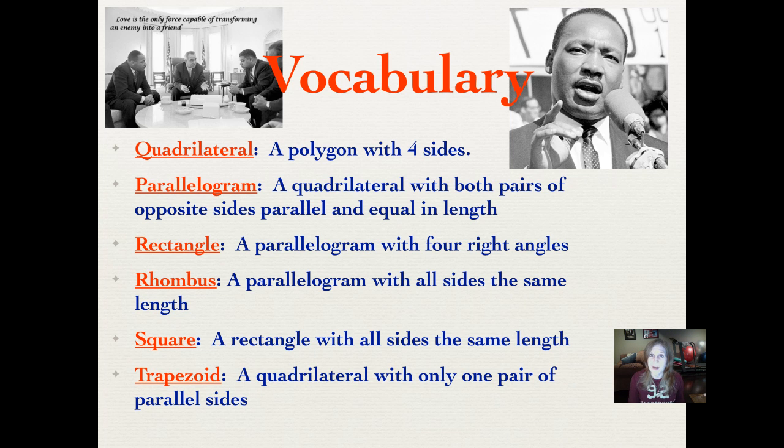Remember, quadrilateral is that overall term for a polygon with four sides. A parallelogram - the word parallel means two lines that run next to each other an equal distance apart and never cross. This wouldn't be a parallel line because they eventually cross, but this would be a parallel line whether it runs this way or that way. A parallelogram is a quadrilateral with both pairs of opposite sides parallel and equal in length. These two sides are equal in length and parallel, and these two sides are equal in length and parallel.